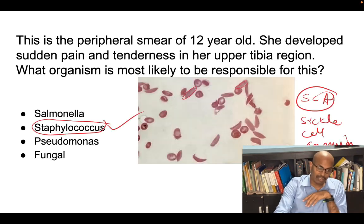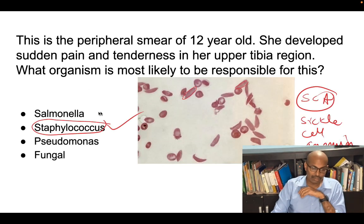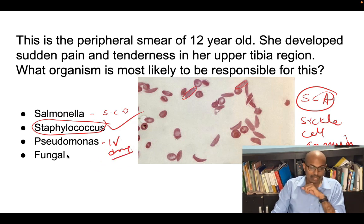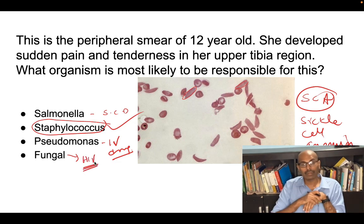To summarize organism associations: Salmonella is associated with sickle cell disease. Pseudomonas is associated with IV drug users — remember that. Fungal infection is associated with HIV patients. You must be very clear about these associations.